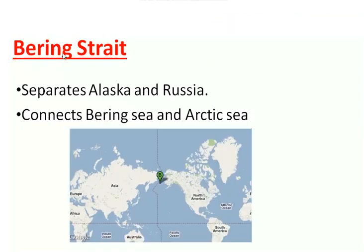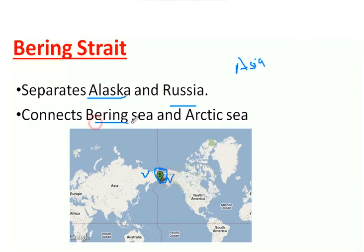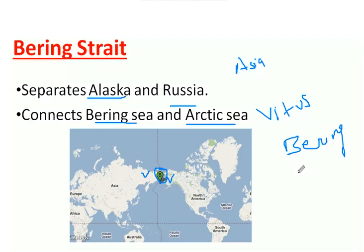The Bering Strait is very important — it is the division between Asia and America, and is the shortest distance between the landmasses of America and Asia. It is located between Alaska (USA) and Russia. It connects the Bering Sea and the Arctic Sea in the Northern Hemisphere. It is named after Vitus Bering, a Danish explorer from Denmark.